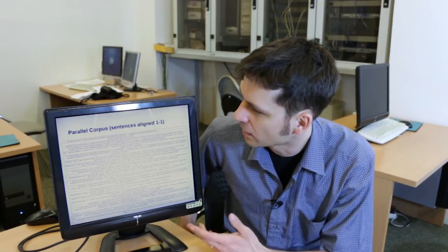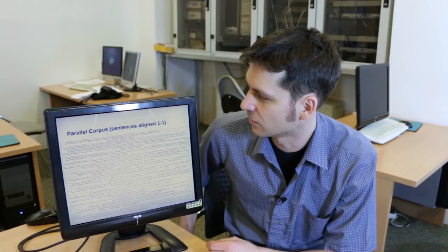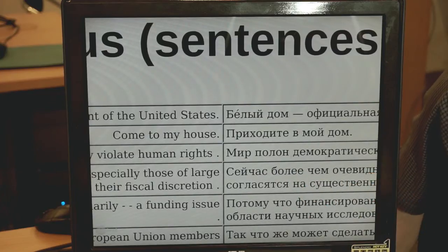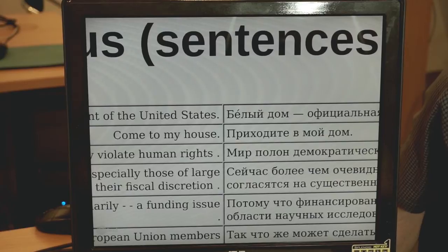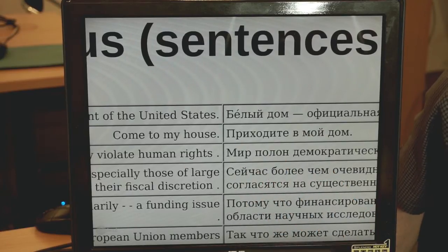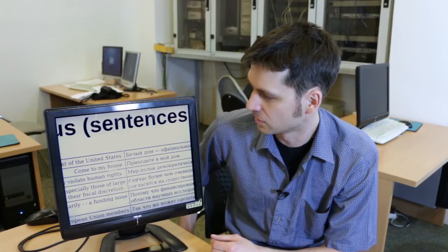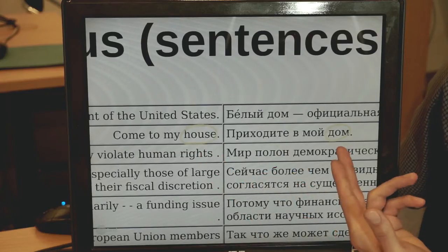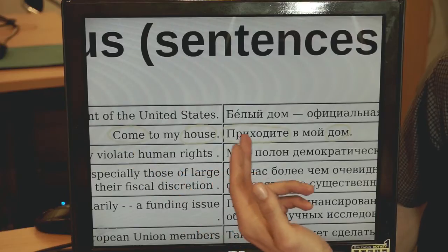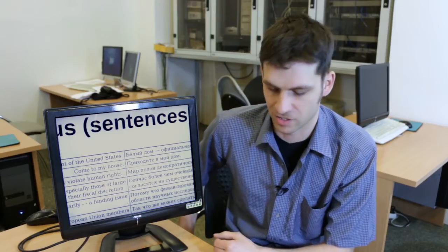The algorithm is again language independent and totally unsupervised. From the sentence aligner, we are given sentence pairs, such as in this corpus. The White House is the official residence of the President of the United States. Bielej dom, oficiálnea residencia presidencia. Kam to my house, prichadite v moj dom. And we would like to learn correspondences between individual words, such as house is the translation of dom and kam can be translated into Russian as prichadite.